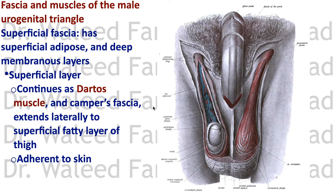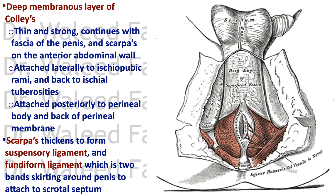Camper's fascia, the superficial layer of the superficial fascia, was a fatty layer. Here it becomes the dartos muscle — a dartos muscle layer in the skin of the scrotum, adherent to the skin. It was of sympathetic supply. The deep layer of the superficial fascia is the extension of Scarpa's fascia, and it becomes the membranous layer of Colles' fascia on the genitalia.